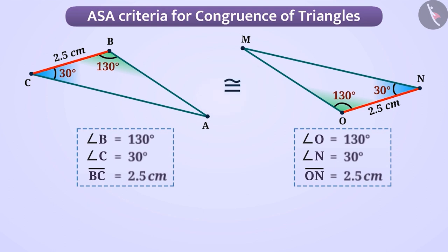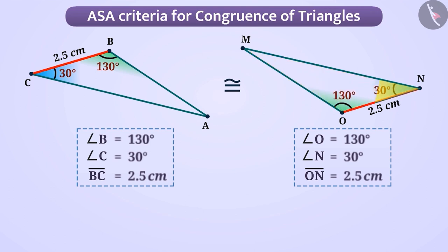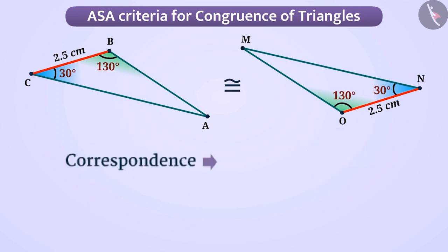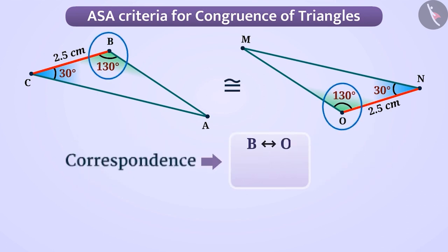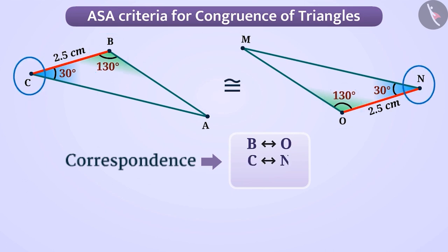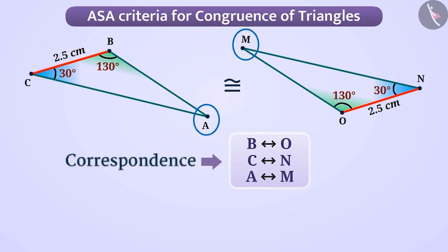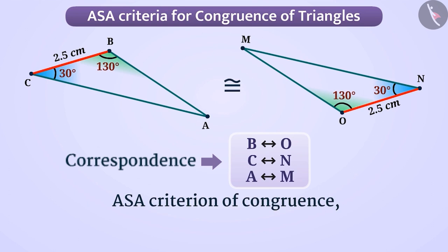both triangles are congruent. If we place one triangle over the other and adjust, we will observe that they cover each other completely and exactly, which verifies that they are congruent. We can show the correspondence as: B corresponds to O, C corresponds to N, and A corresponds to M. We can write the congruence relation in symbolic form as triangle BCA is congruent to triangle ONM.